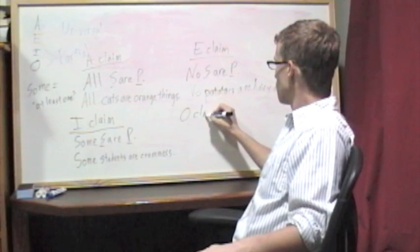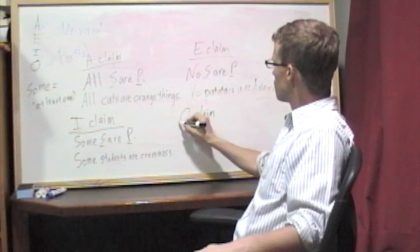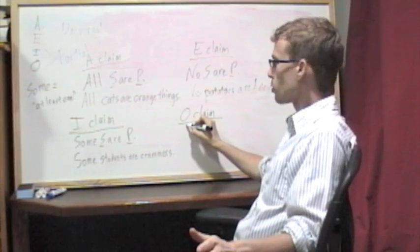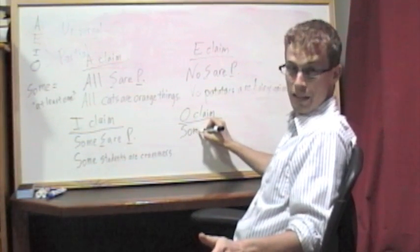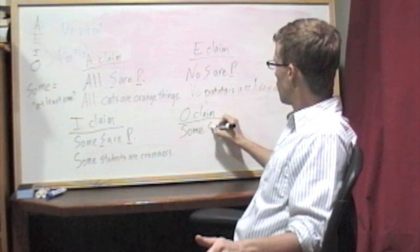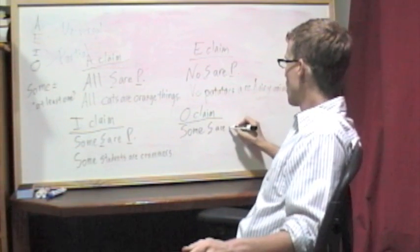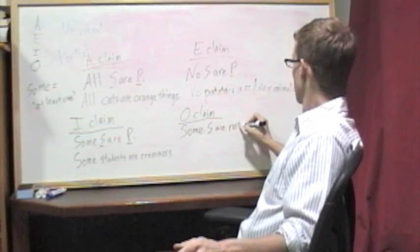An O claim. This is also a partial claim. So, we'll start with some, meaning at least one. Some S are not P.